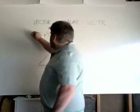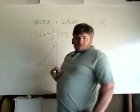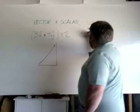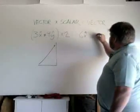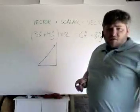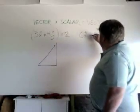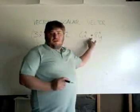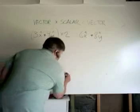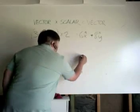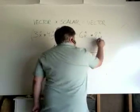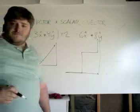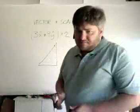So if I multiply that by 2, all I'm going to end up doing is making all my vectors double. So I end up with 3x hat plus 4y hat times 2 is nothing more than 6x hat plus 8y hat. If you think about it, it's nothing more than going this way by 3, this way by 4, this way by 3, this way by 4, or this way by 6, that way by 8. It's the same process.